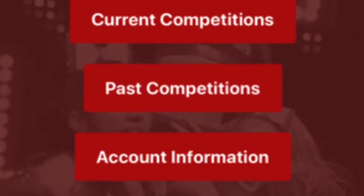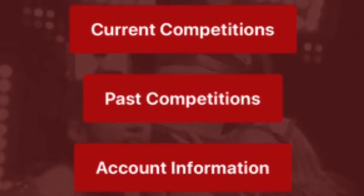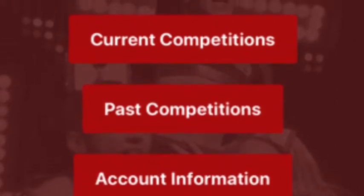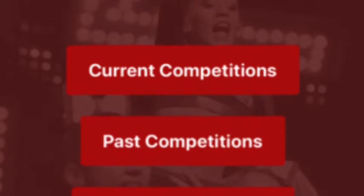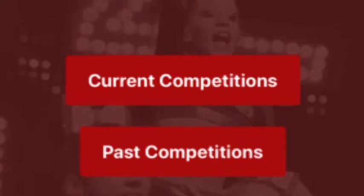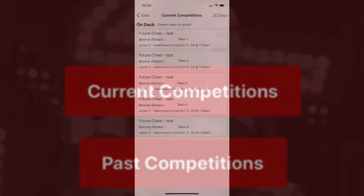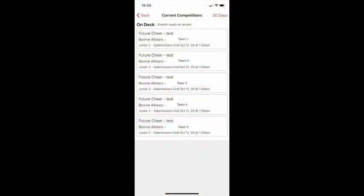On the front page of the app, you'll find a button that says Current Competitions. Please select this. You'll now see a list of all the teams you have registered. Please select the team you would like to make the recording for and then go to the next screen.